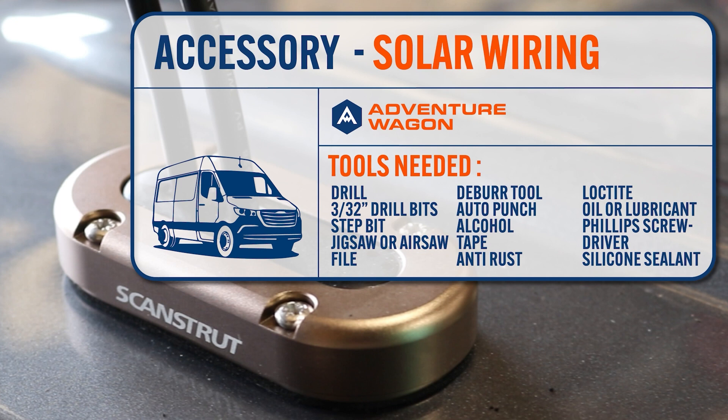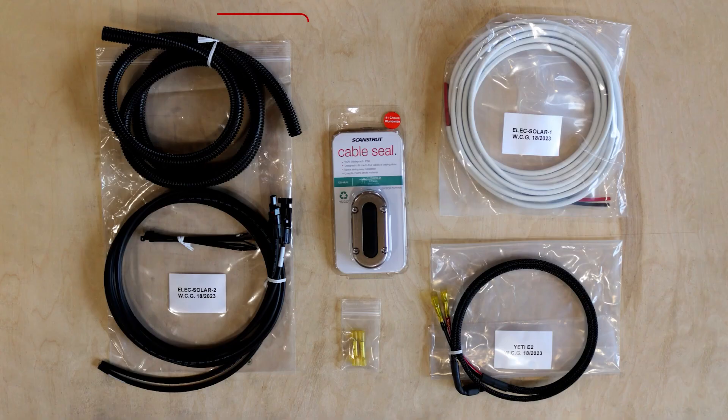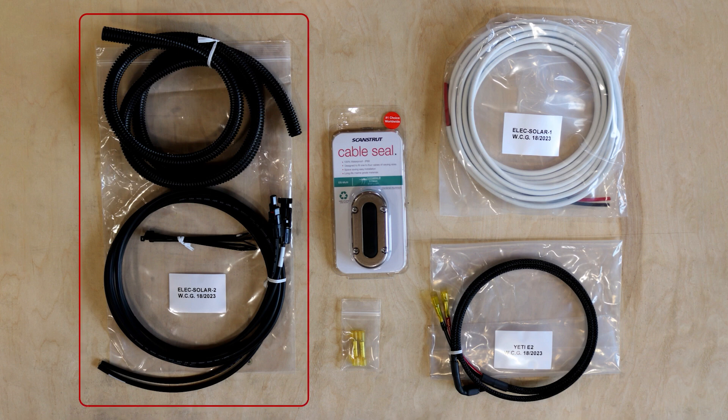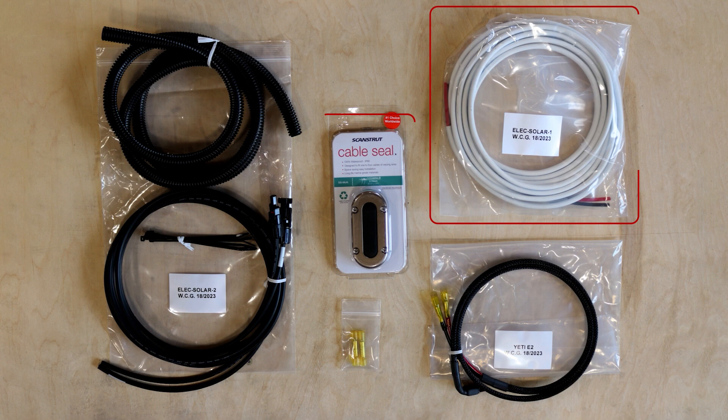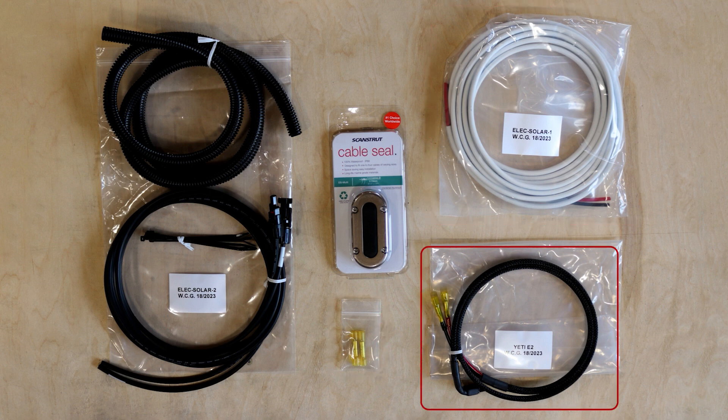Before you start this installation, it's a good idea to take your scan strut solar gland and put it in the freezer for at least a couple hours. In this kit you'll find your solar wiring with protective sleeve for the roof that goes from your solar panels to the gland, the scan strut solar gland, duplex wiring for running inside the van from the solar gland to the Yeti, butt connectors to connect it all together, and your final run of wiring with an Anderson connection to plug into the Goal Zero.